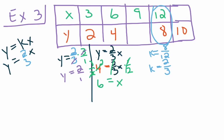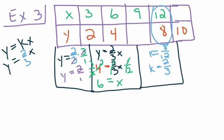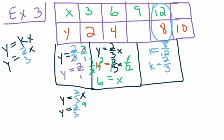Next, substituting X = 9 into Y = 2/3 X: Y = 2/3 × 9/1. The 3s cancel — 3 goes into 9 three times — so Y = 2 × 3 = 6. Our next Y value is 6.